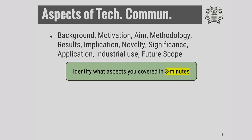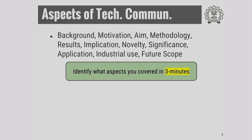Now, please take the paper on which you have written your description and underline these aspects and identify them. For example, if you had written background, underline those words and write 'background' next to them. Suppose you had written results, underline those words and write 'results.' So, in three minutes, what are the aspects among these — background, motivation, aim, methodology — that you were able to cover?